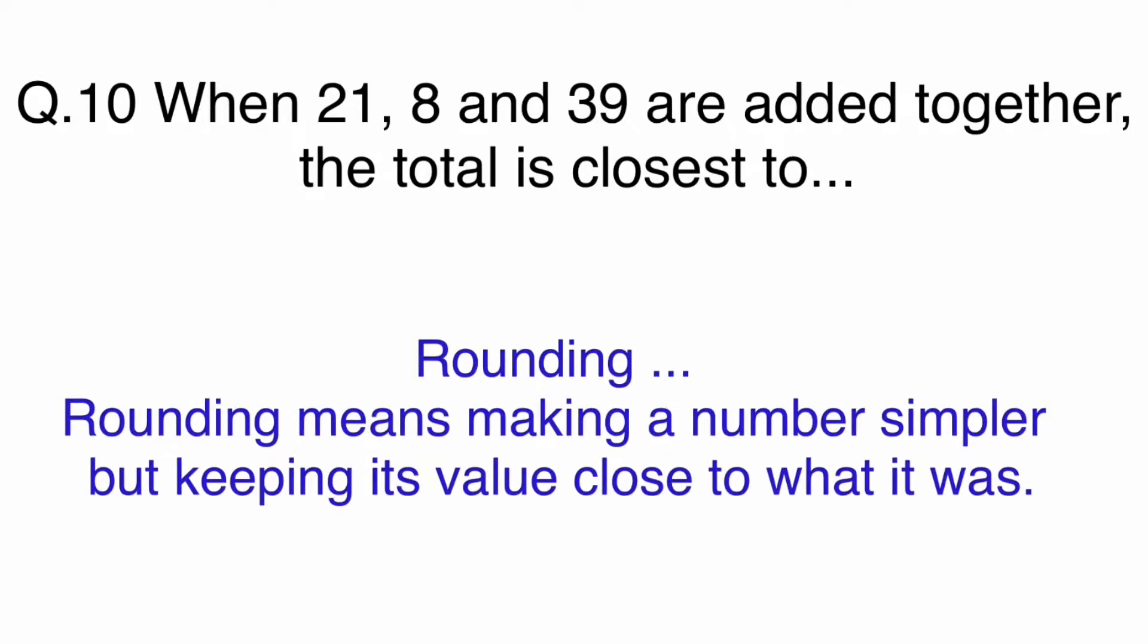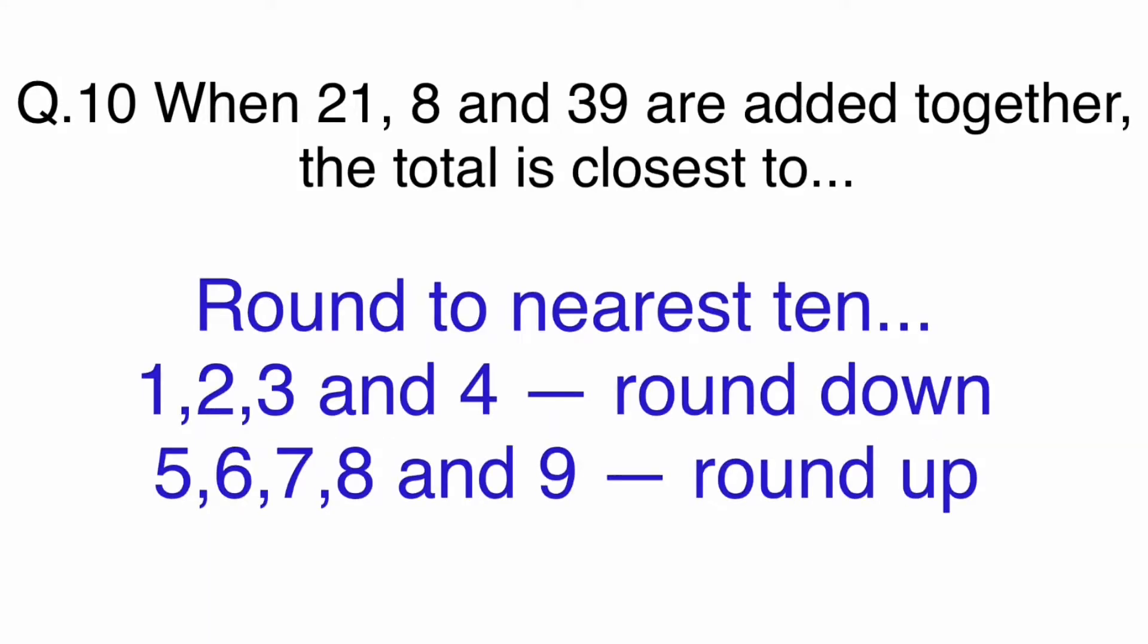In this question, let's use the rounding method. Rounding means making a number simpler but keeping its value close to what it was. 1, 2, 3 and 4 round down. 5, 6, 7, 8 and 9 round up to the nearest 10. This is the common rule to rounding.